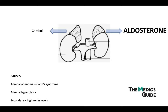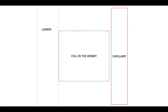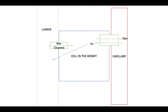In the kidney, in the distal convoluted tubule, there are cells involved with electrolyte reabsorption, and there are a number of channels that help with this. We've got a sodium channel and a sodium-potassium pump, and if you look at the arrows you can see the direction of ion flow. Normally, this is regulated by aldosterone.